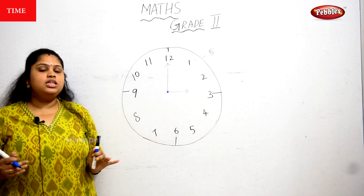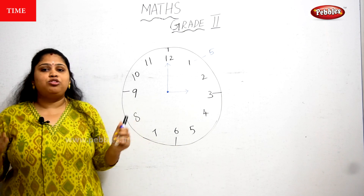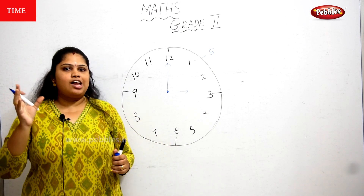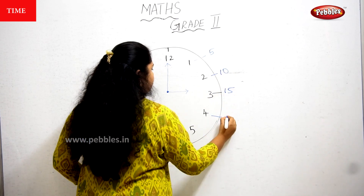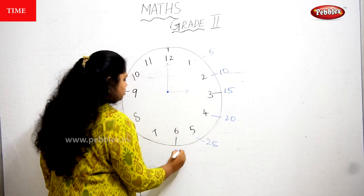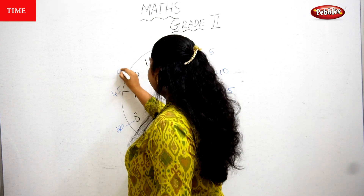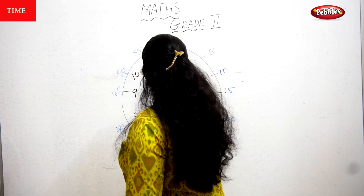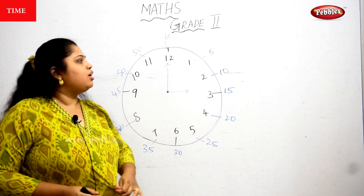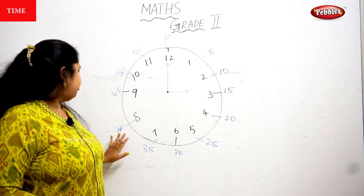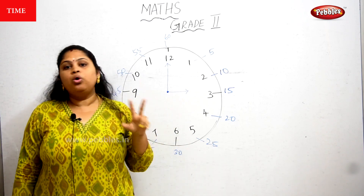On a wall clock or wristwatch you only see numbers 1 through 12, so you have to memorize the skip-count value of each number. 1 means 5, 2 means 10, 3 means 15, 4 means 20, 5 means 25, 6 means 30, 7 means 35, 8 means 40, 9 means 45, 10 means 50, 11 means 55, and 12 means 60.